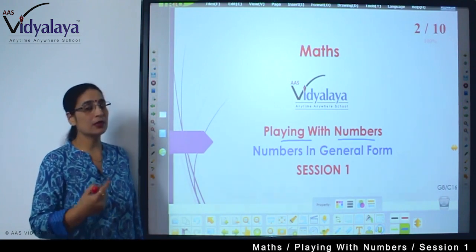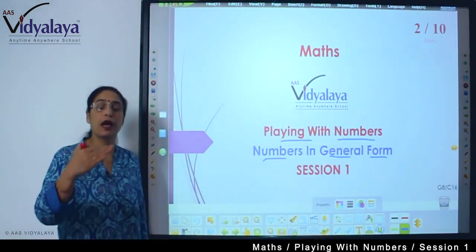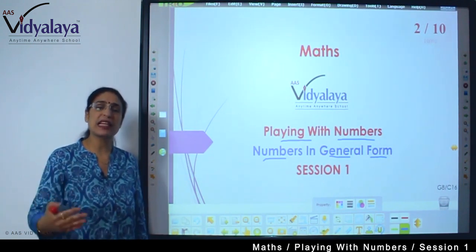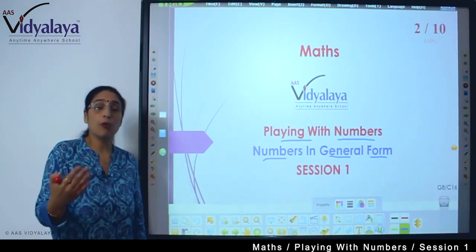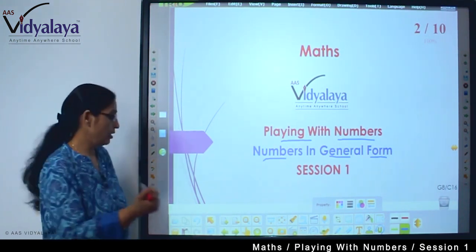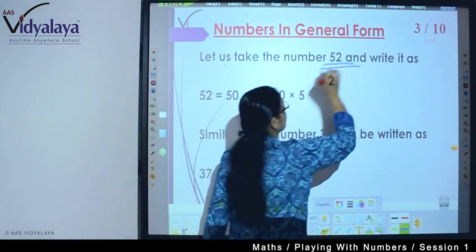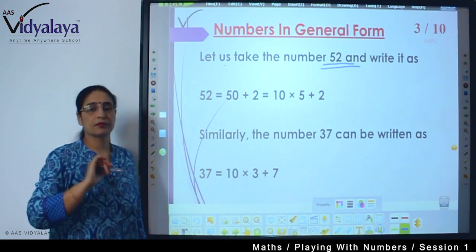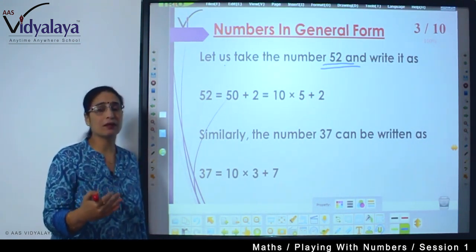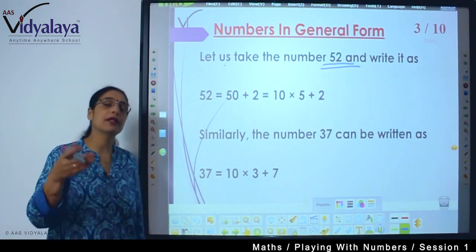So today we are going to look for numbers in general form. General form means the basic thing is how we can understand. If we take the number 52, how will you speak out? So we have to write 52, but if we have to write maths as well.